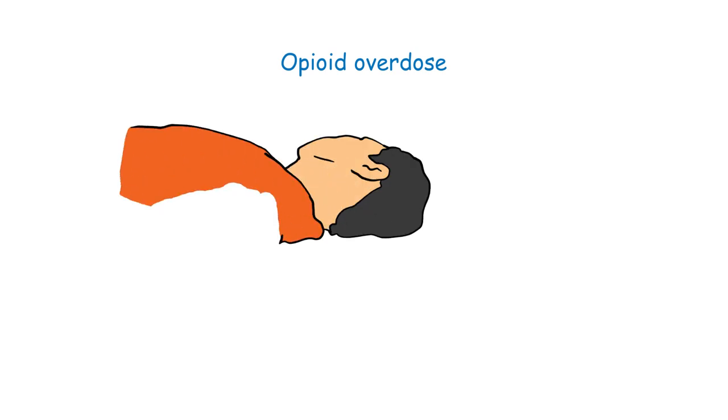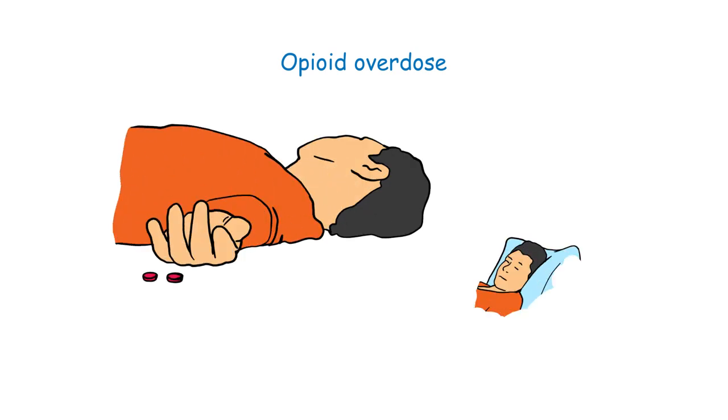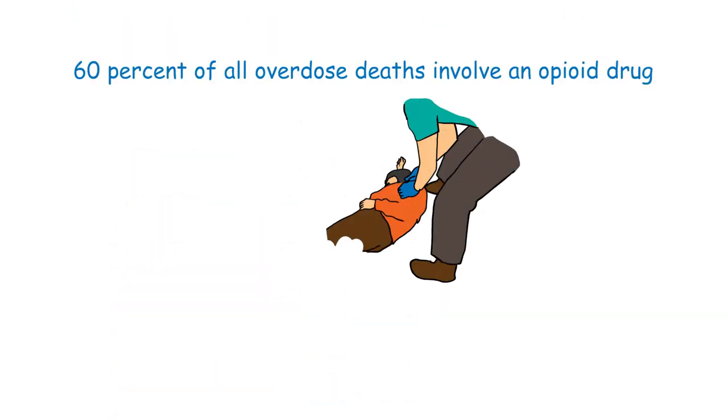Opioid overdose is an all-too-common consequence of opioid abuse, which can often result in severe respiratory depression that can be fatal. 60% of all overdose deaths involve an opioid drug, and 91 people in the U.S. alone die from an opioid overdose each day.